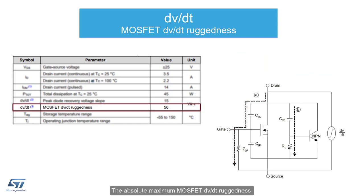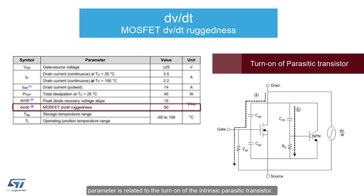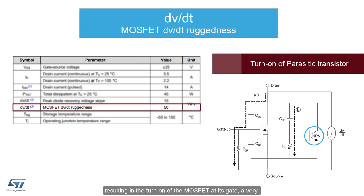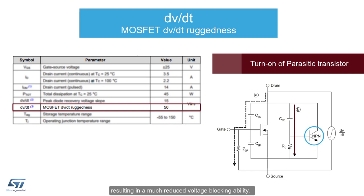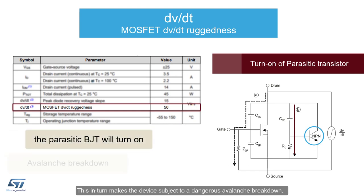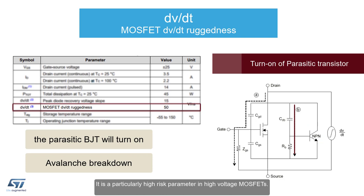The absolute maximum MOSFET dV/dt ruggedness parameter is related to the turn-on of the intrinsic parasitic transistor. Much as the dV/dt can cause a displacement current through the gate-to-drain capacitance resulting in the turn-on of the MOSFET at its gate, a very high dV/dt can also put a displacement current into the base of this parasitic transistor through an internal capacitance. If this current is large enough, it will cause the bipolar transistor to turn on, resulting in a much-reduced voltage-blocking ability. This in turn makes the device subject to a dangerous avalanche breakdown. It is a particularly high-risk parameter in high-voltage MOSFETs.